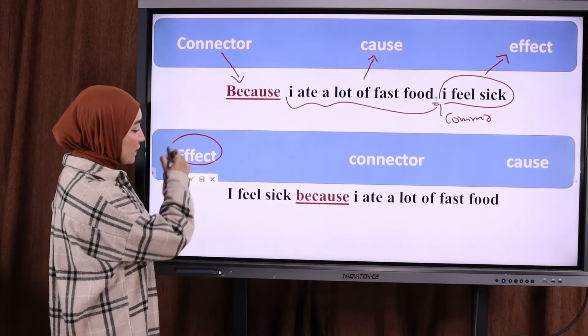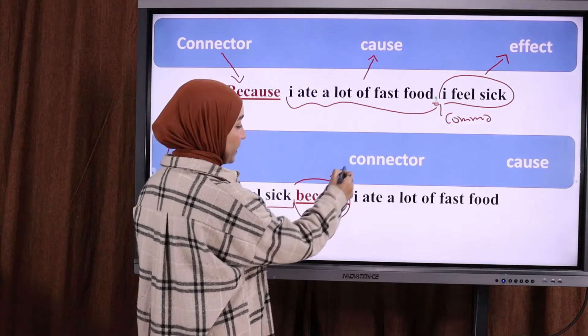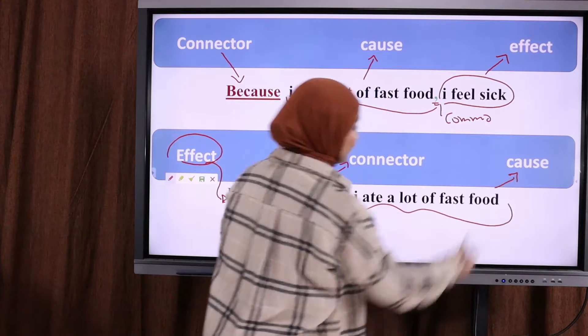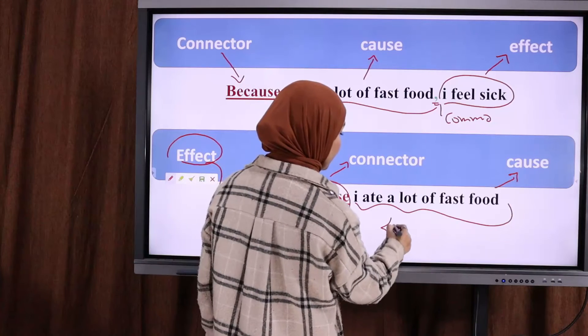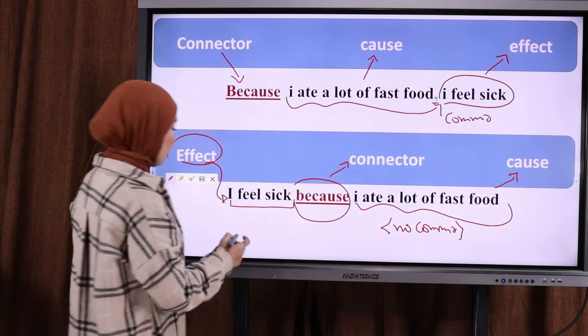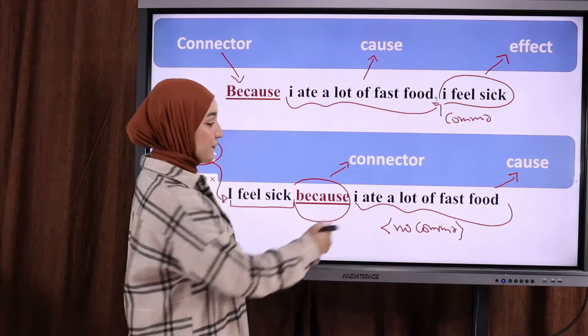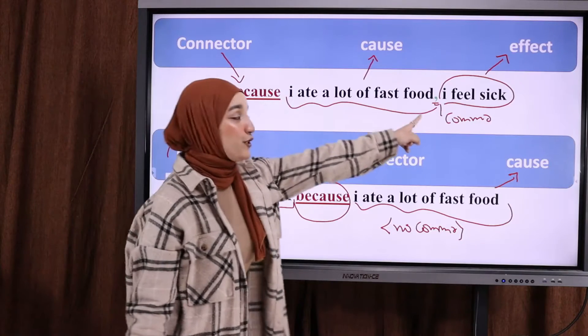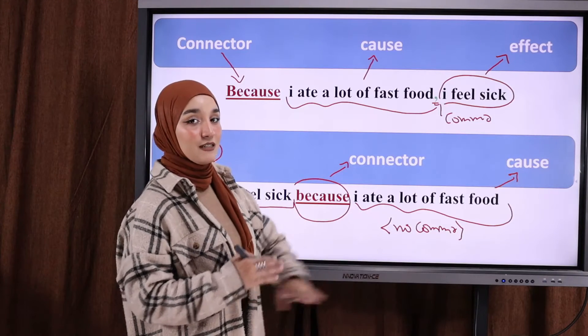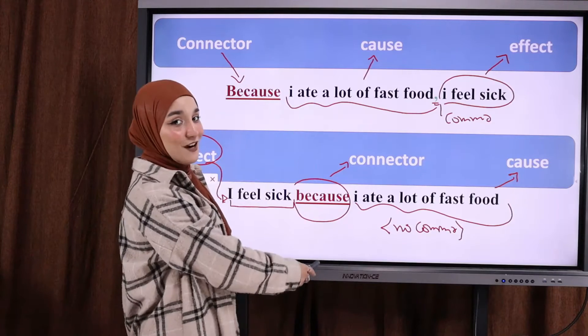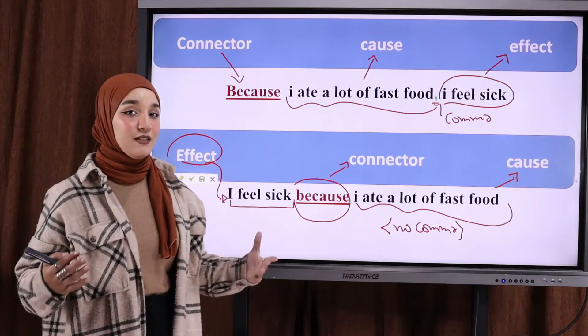What is the difference between this sentence and this sentence? We don't put comma, so no comma here. If you put the connector in the middle, you don't put the comma. You start with the connector, you put the comma in the middle. You don't start with the connector, you don't put the comma in the middle of the sentence. No comma. Comma, no comma. Remember, both of them are correct. You can use this method or this method. Both structures are correct.